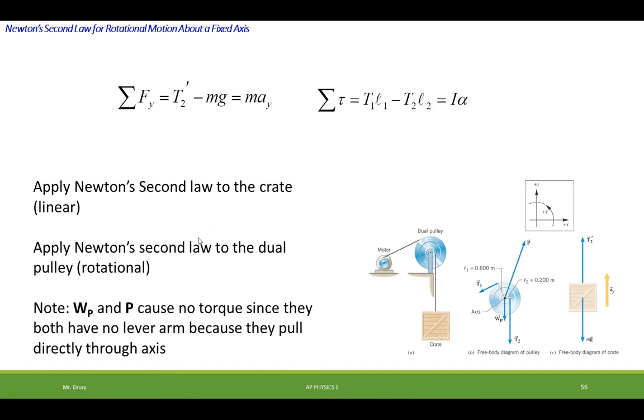And apply Newton's second law to the dual pulley. Note that the weight of the pulley and P cause no net torque since they have no lever arms. So the only thing that has a lever arm is this torque and this torque. Okay, so now why is one positive, one negative?